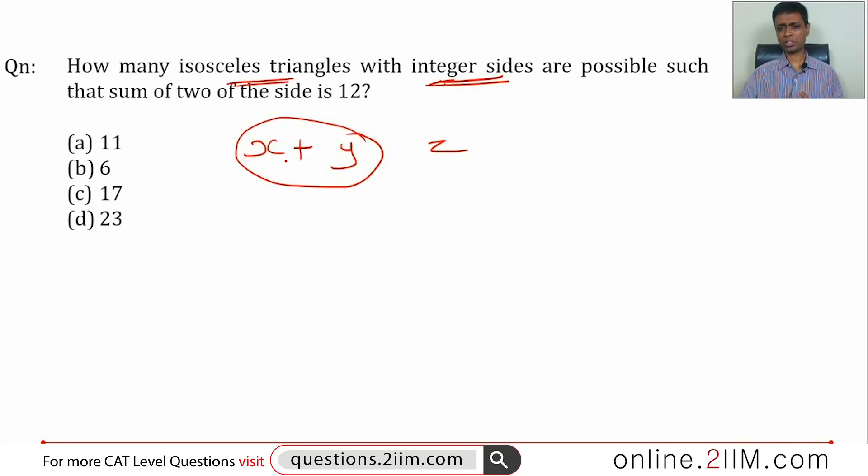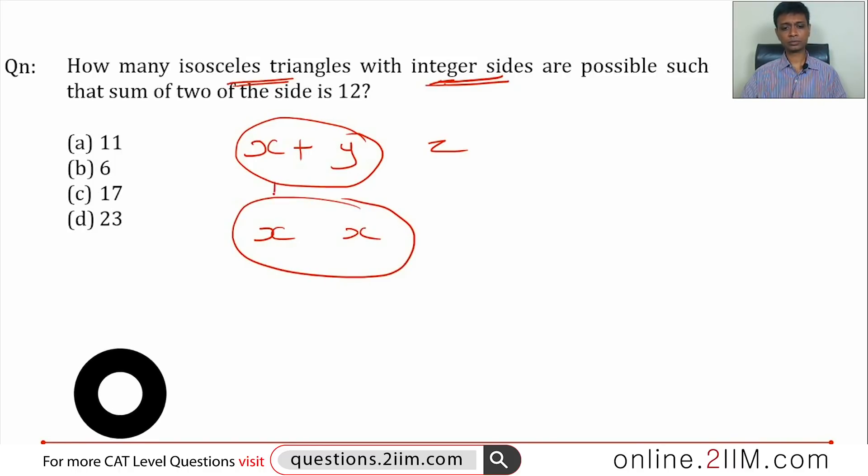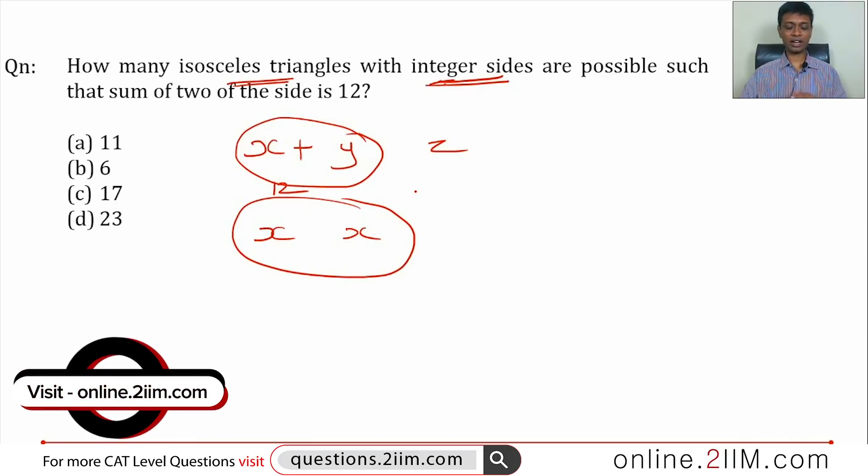Let's take one step back. Isosceles triangles have two sides that should be equal. There are two possibilities here: we have the two equal sides adding up to 12, or two equal sides and an unequal side where equal plus unequal side is 12.